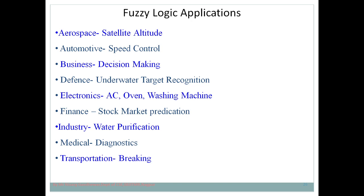In transportation, fuzzy logic is used for braking — deciding whether brake is applied slightly, moderately, or completely. In short, whenever your answer is not exact but approximate, fuzzy logic can be applied. These are just some of the fields; there are many other applications where fuzzy logic can be used.